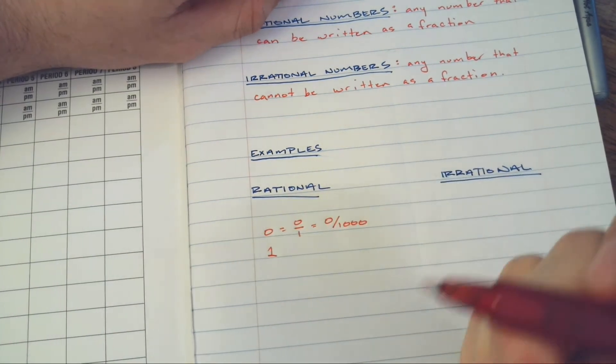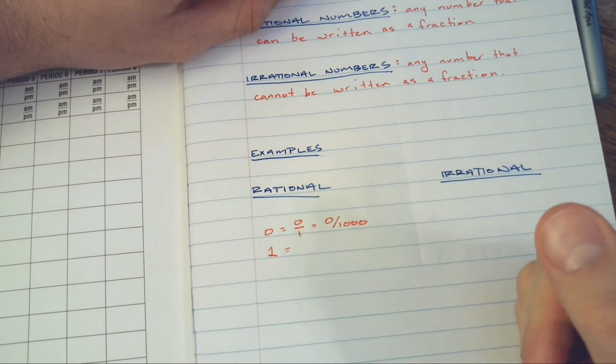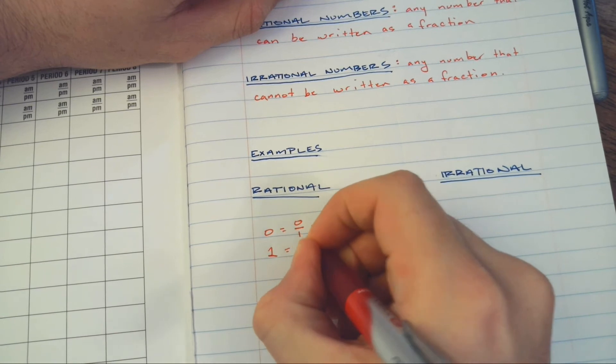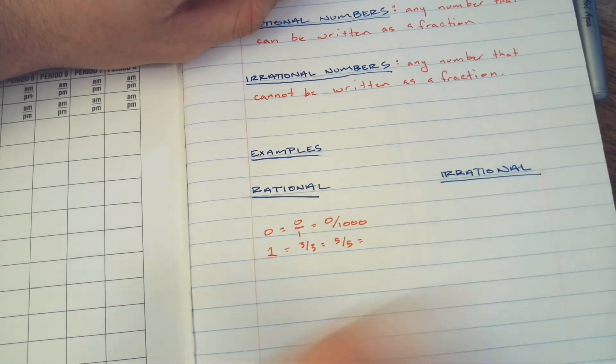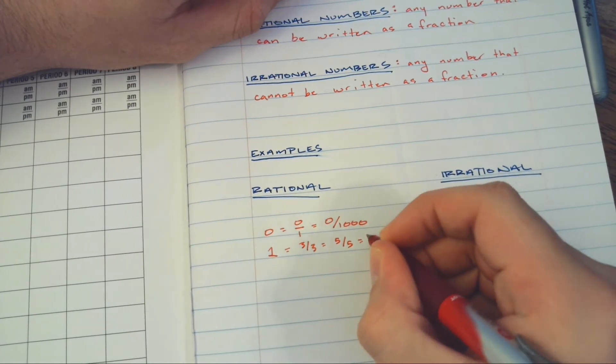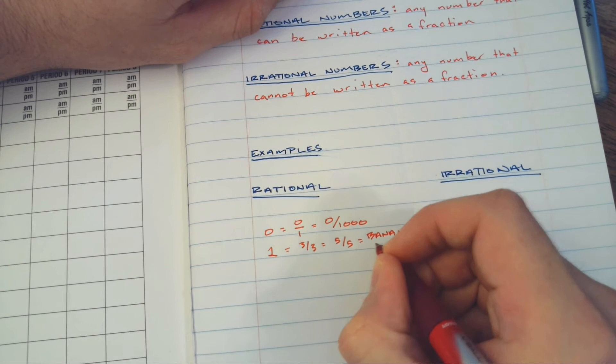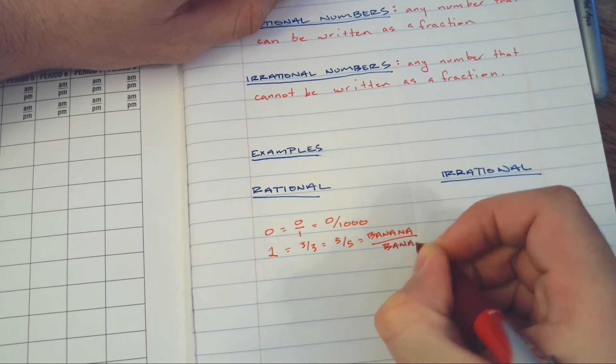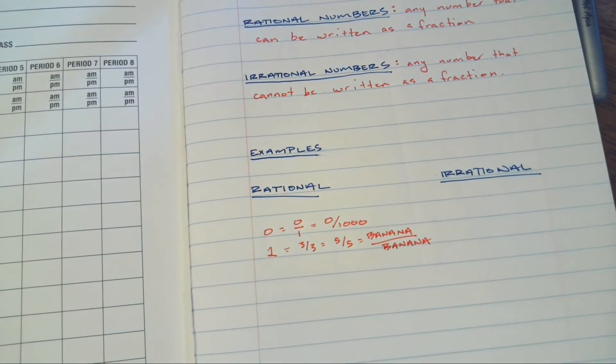Can one be written as a fraction? Yeah, of course. So anything divided by itself is one. So that can be three divided by three, that can be five divided by five, that can be anything. If it's a banana, it can be banana divided by banana, which is still one. Actually, units are gone, it's just one.